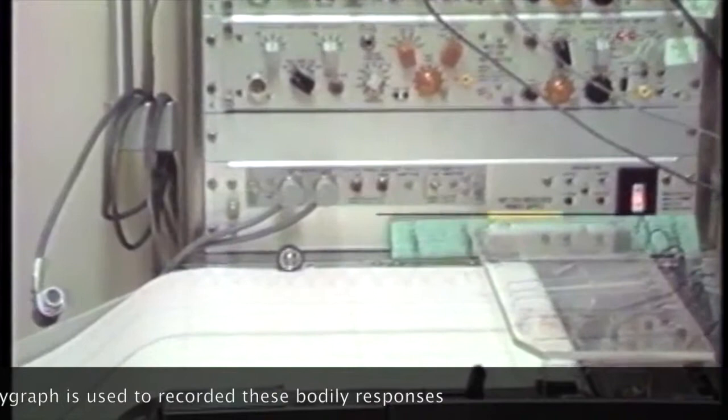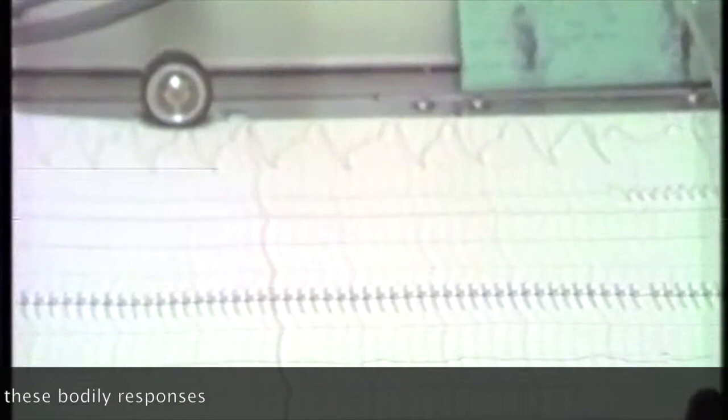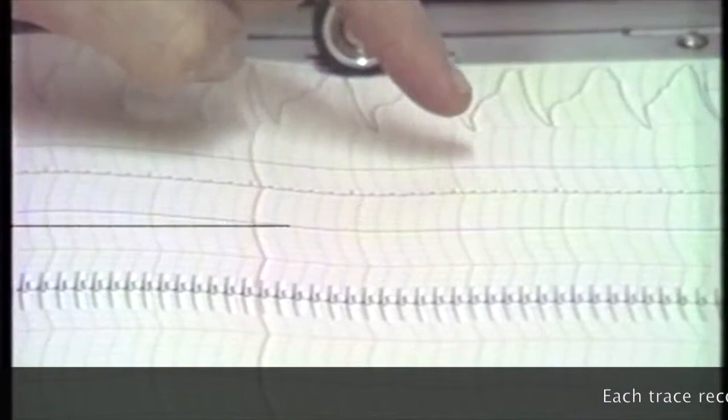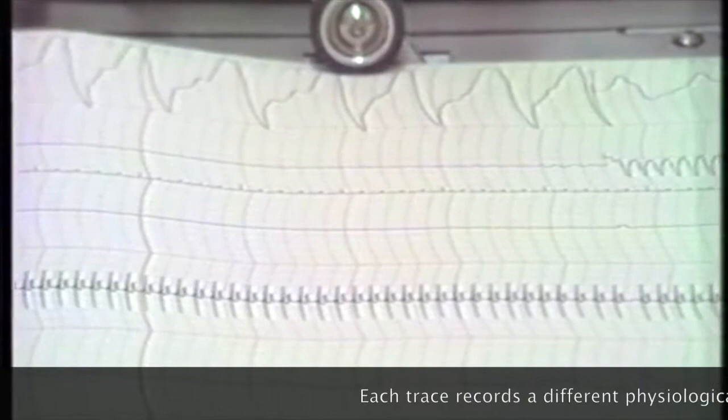On this chart you can see several physiological responses being recorded simultaneously. The top chart shows changes in respiration rate. The second chart shows changes in pulse volume which represents the extent of the peripheral circulation.